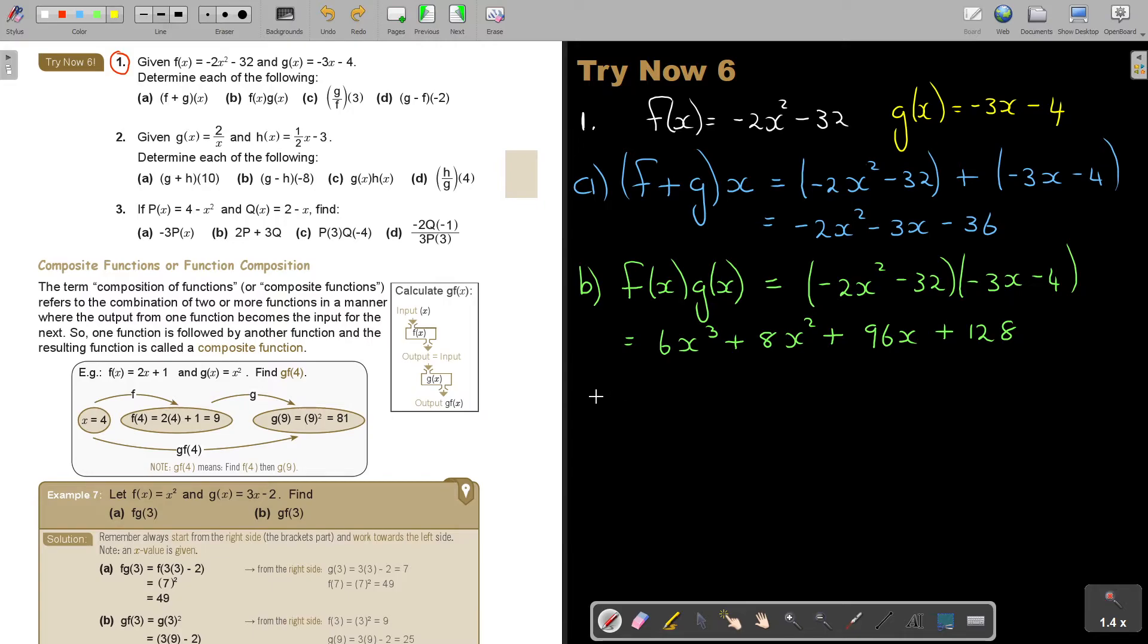And then number c. This is going to be g over f, but now there's a 3. So in this case, they want you to substitute. So I will say, let's just go negative 2, and then it's 3 squared minus 32. And then this is going to be, oh, if g is on top, g is on top. Let's just repeat.